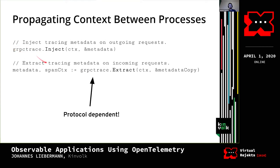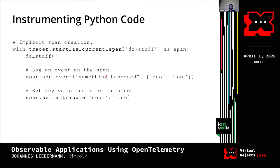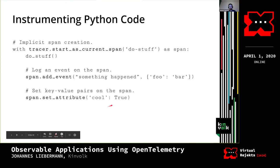Python instrumentation looks more minimalist. You call tracer.start_as_current_span as a context manager — when the with block exits, the span automatically closes. Similarly to Go, you can add events and set attributes to tag your span. Context propagation in Python is handled by the library automatically, so you don't need to deal with inject or extract, which is really neat.